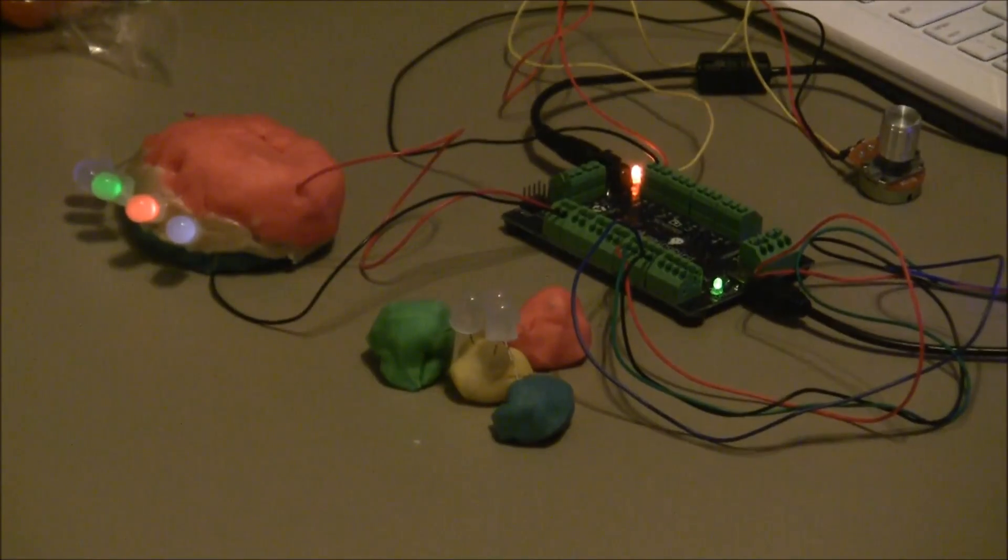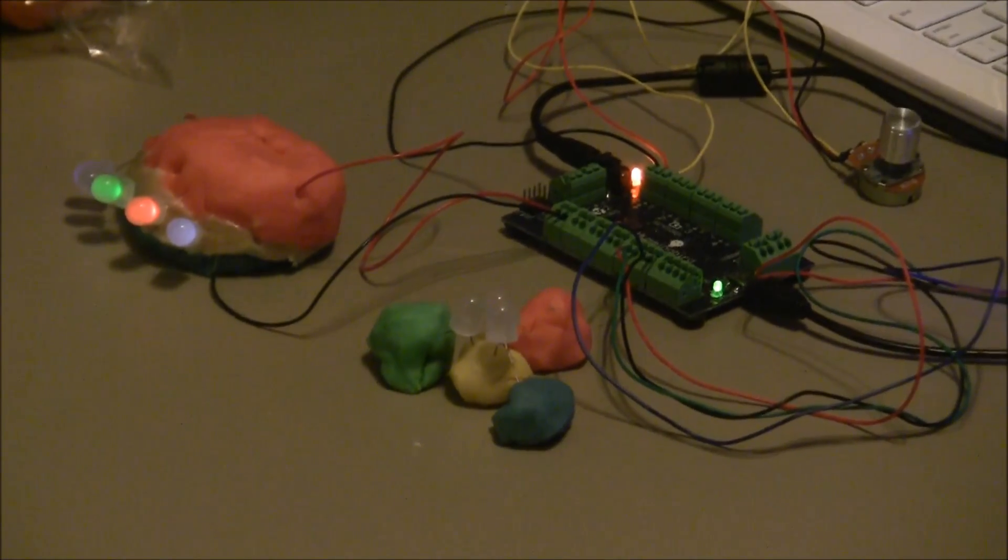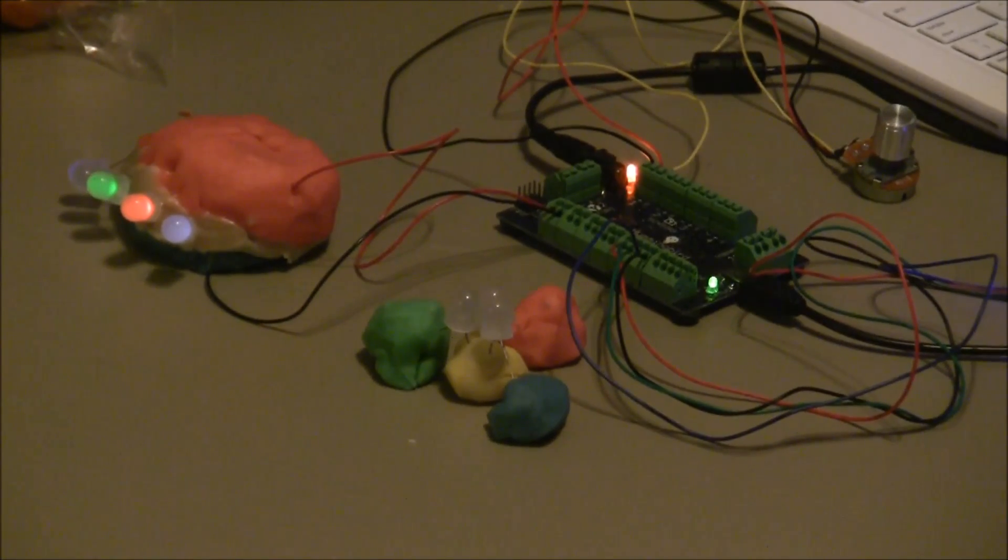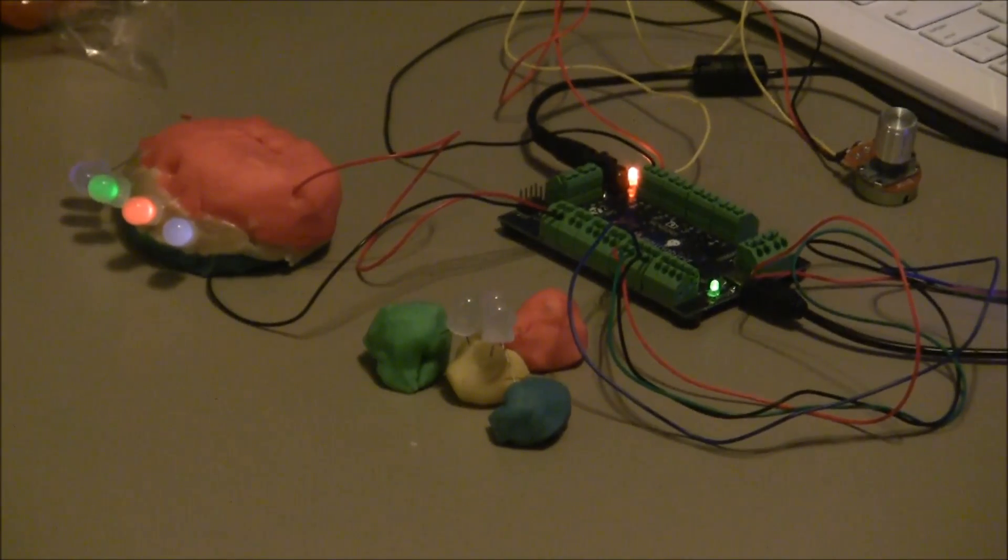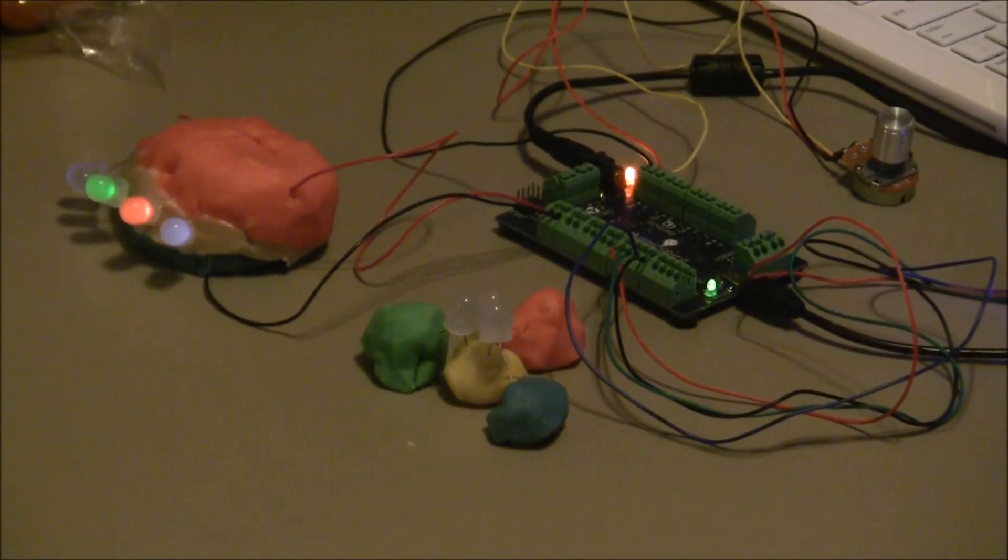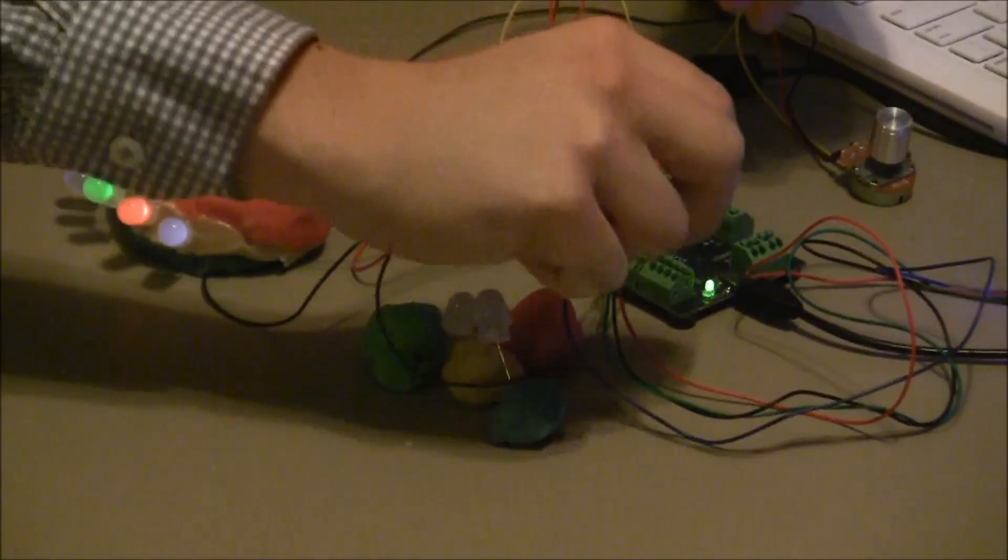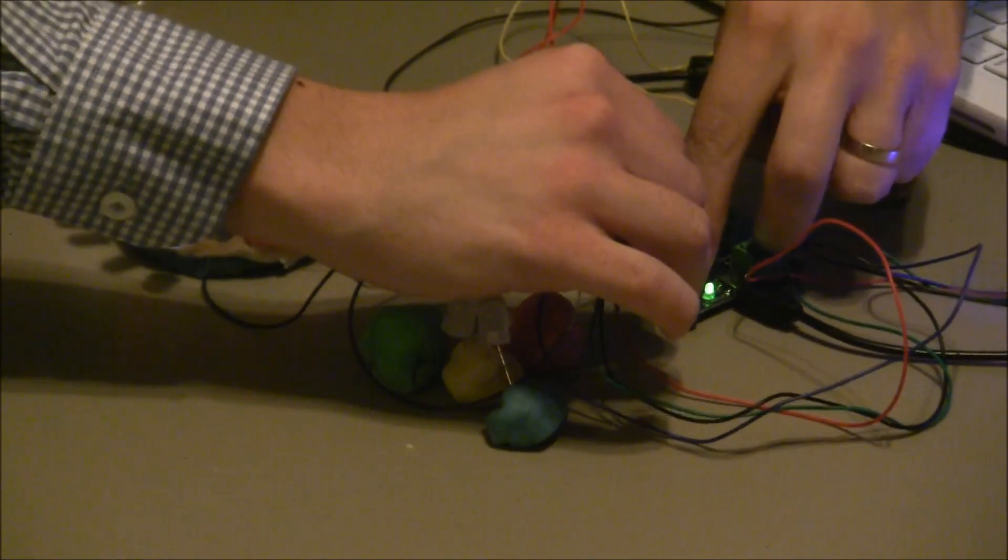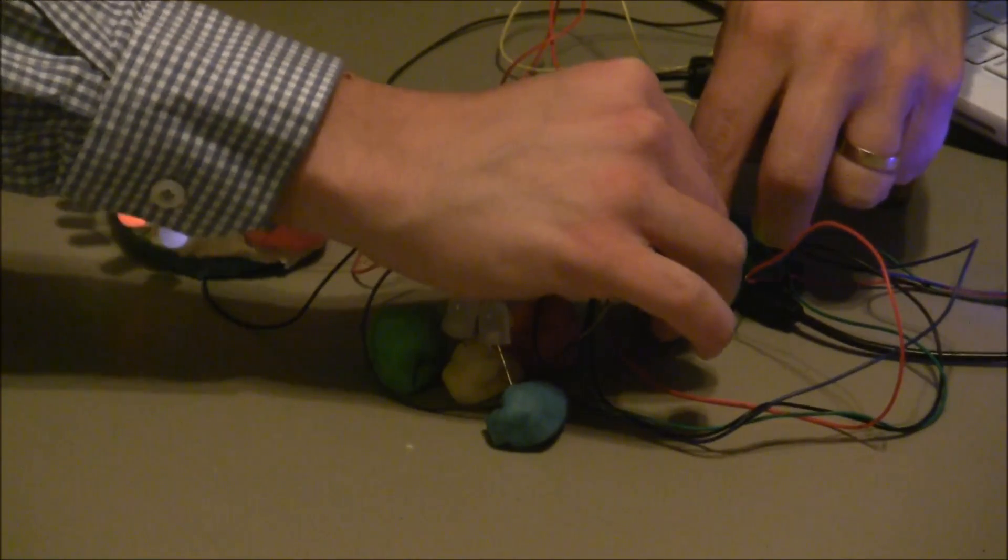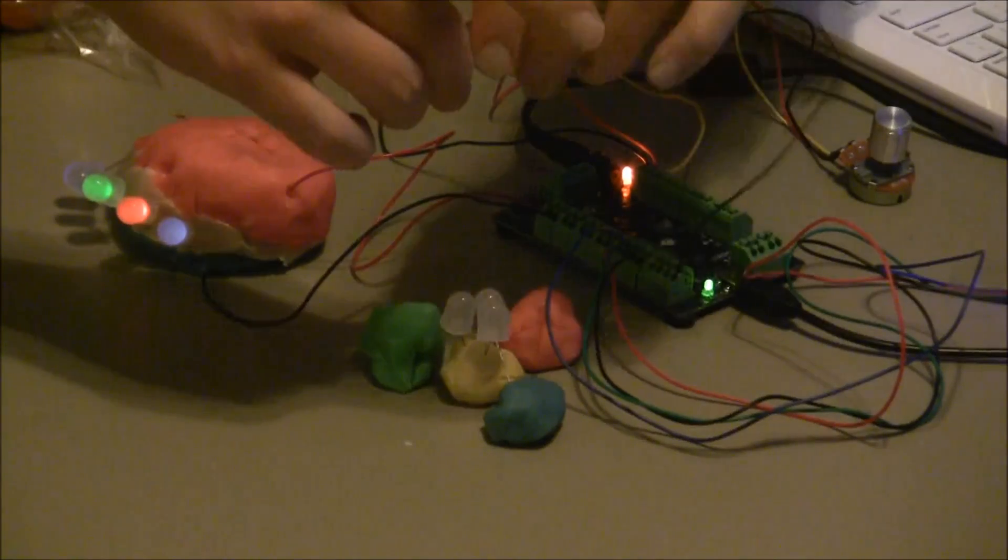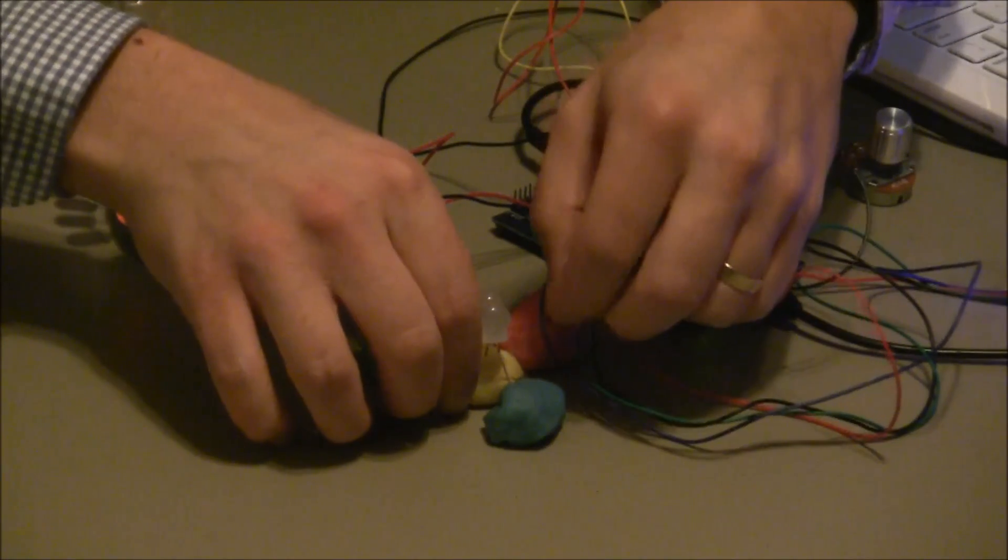And then I'll take some wire that I've stripped already. I've got my black wire, which I'll hook up to the minus terminal on the Hummingbird's tricolor LED port 2. And I'll stick that in here, in the yellow play-doh.